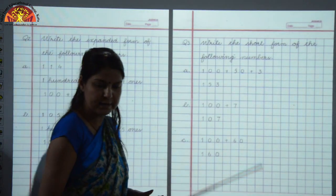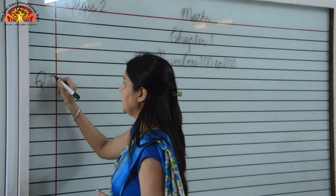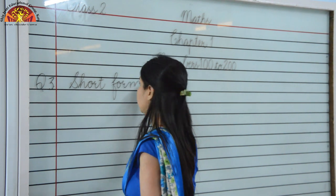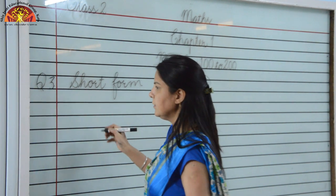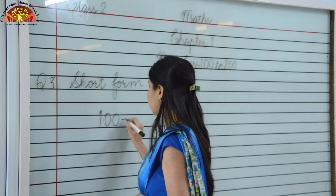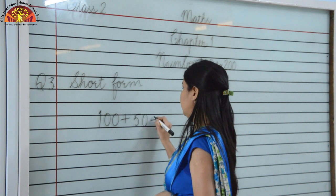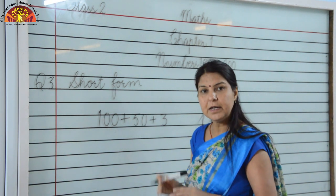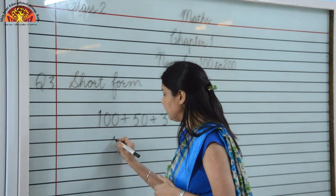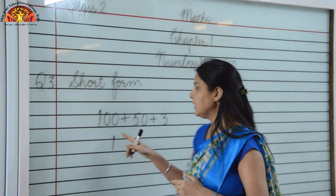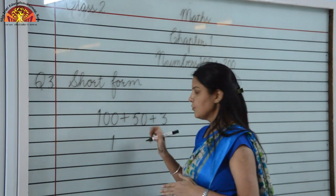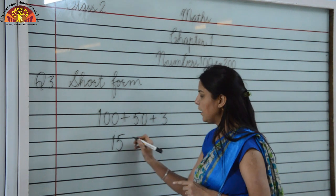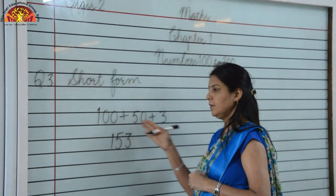Now let's see the sum on the board. The sum is given in expanded form: 100 plus 50 plus 3. You have to change it to short form. Short form is the face value of the given results. Face value of 100 is 1. You have to write these digits at their correct places: 5 is at the tens place, so write 5 at the 10's place. And 3 is at the 1's place, so write 3 at the 1's place. This gives short form 153.